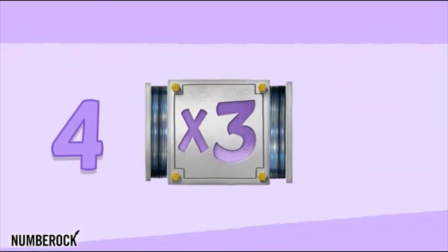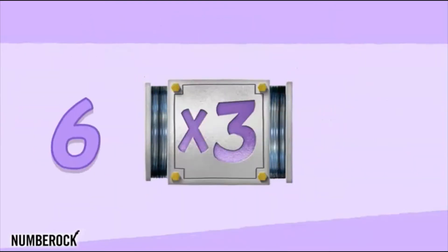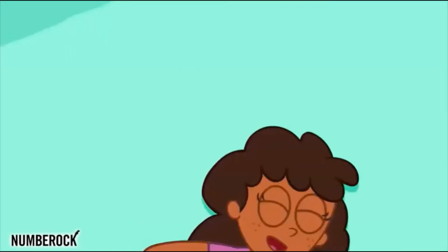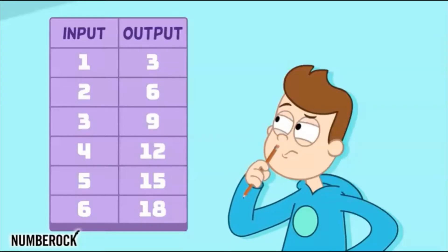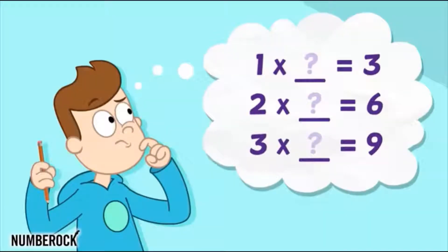In goes four, out comes twelve. In goes five, out comes fifteen. In goes six, out comes eighteen. The rule is times three, and the view is pristine. What's happening between the in and the out? We can always find out without any doubt. Make an educated guess and test it out. Till you find what the rule is all about.